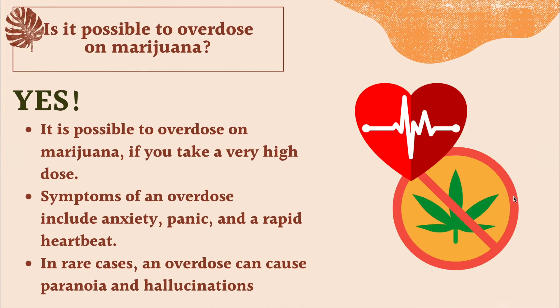Is it possible to overdose on marijuana? Yes, absolutely. Just like any other drug, you can overdose on marijuana. Very few people die from it, but you can get really sick and may need to go to the hospital. It is especially possible to overdose if you take a very high amount, such as with dabbing or eating edibles.